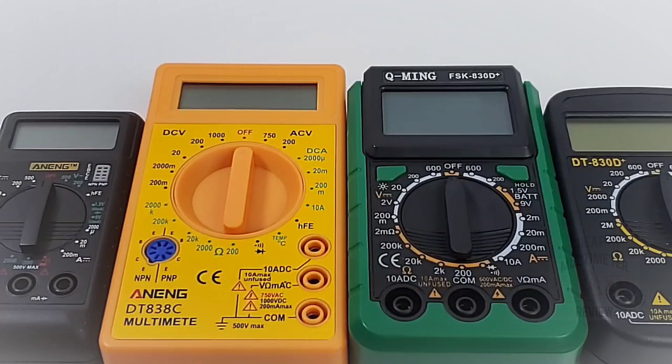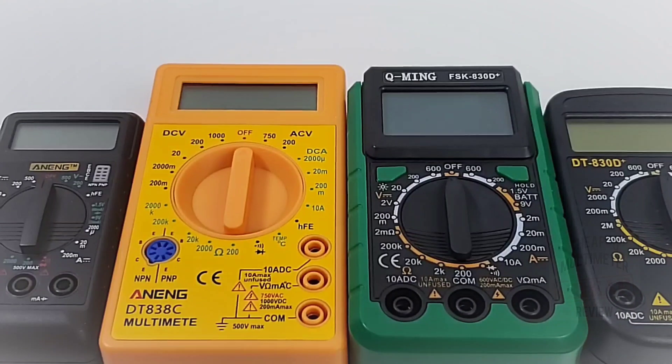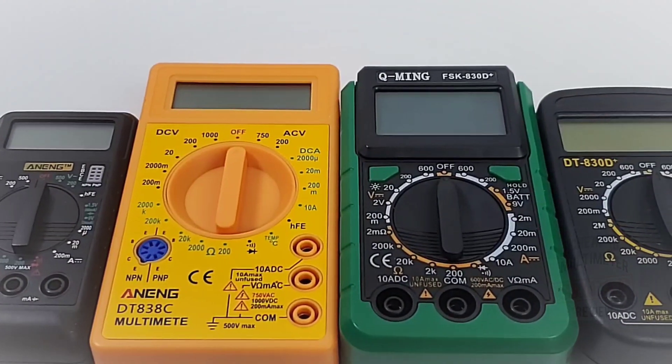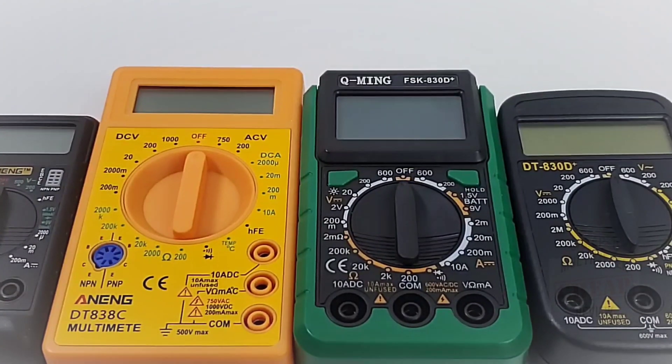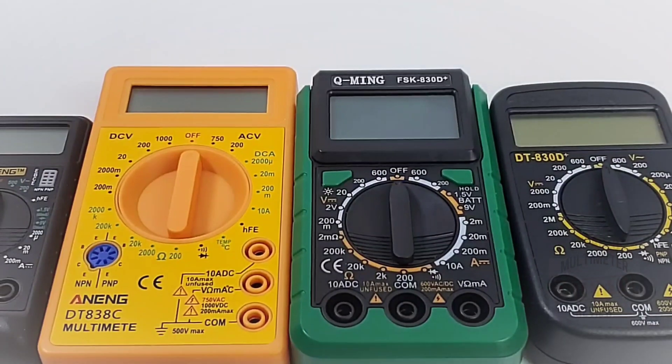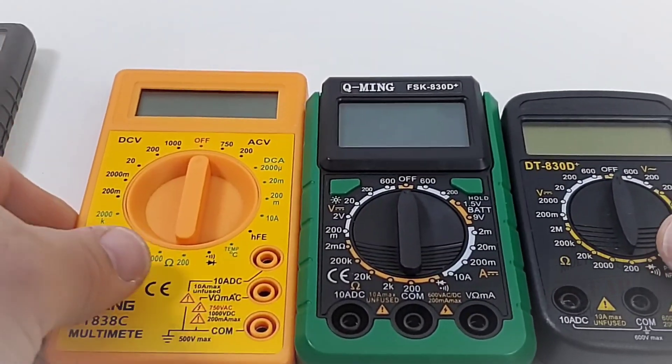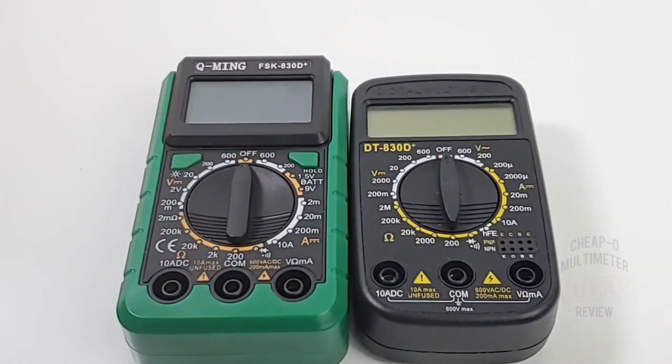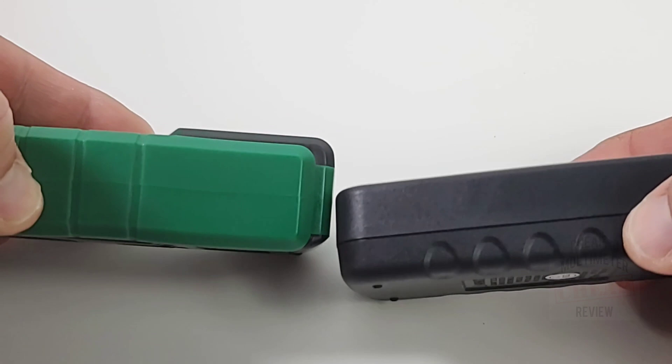If we compare Mr. Q-Ming to the typical 830 clones out there, you can see he is definitely chunky, thicker than your average 830 here, even thicker than our 830D over here which is a pretty thick little 830 clone again.